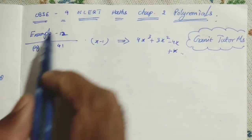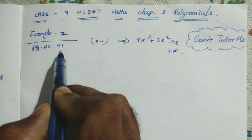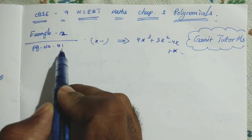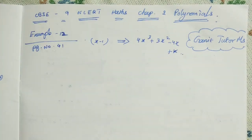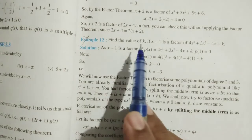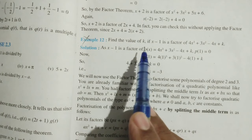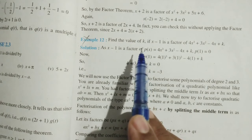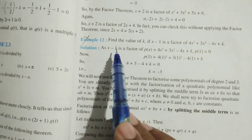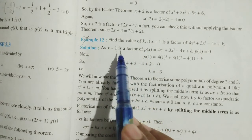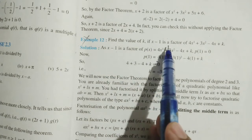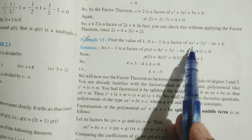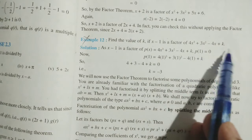In this video, I am going to solve the problem — Example 12, page number 41, Chapter 2, 9th set of NCERT. Find the value of k. This is a more important problem, frequently important to mark. Find the value of k if x minus 1 is a factor of 4x cubed plus 3x squared minus 4x plus k.